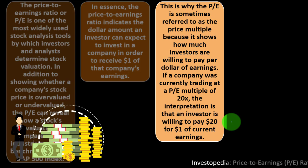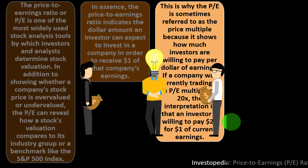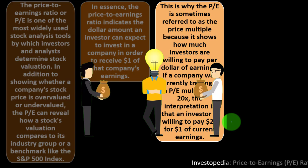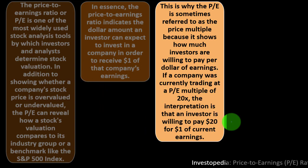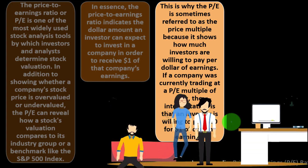This is why the P/E is sometimes referred to as the price multiple — it shows how much investors are willing to pay per dollar of earnings. If a company is trading at a P/E multiple of 20x, an investor is willing to pay twenty dollars for one dollar of earnings. If we invest twenty dollars, we hope for a return in the future dependent on the company generating revenue, either as a dividend or through reinvested earnings.